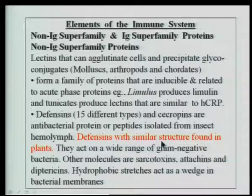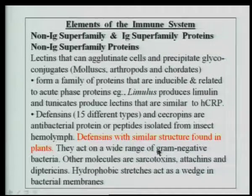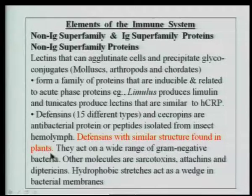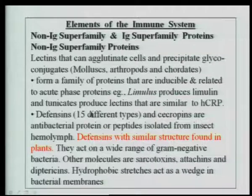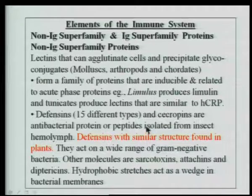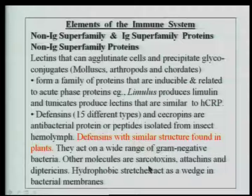Defensins have a similar structure even in plants, though with some variations. They act on a variety of gram-negative bacteria, and since there are different types of defensins, different types of bacteria can be combated. Other molecules of antibacterial nature are sarcotoxins, attacins, and diptericins, all seeming to have hydrophobic stretches that act as a wedge into the bacterial membrane to inactivate the bacteria.